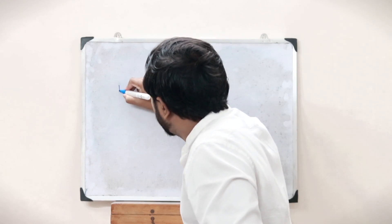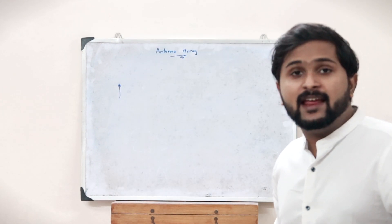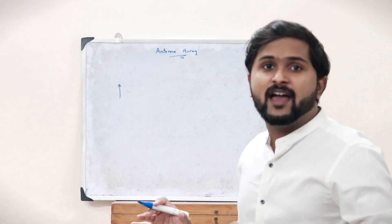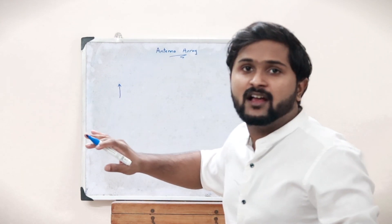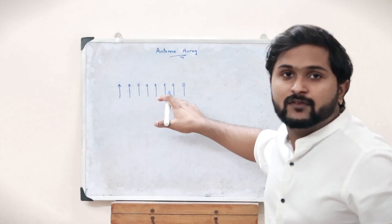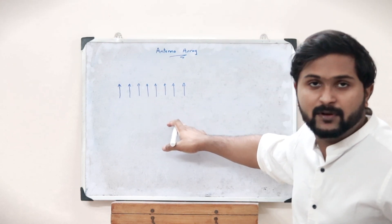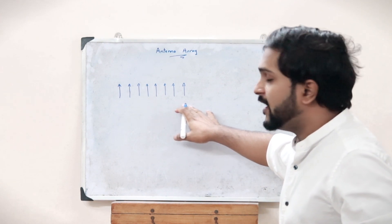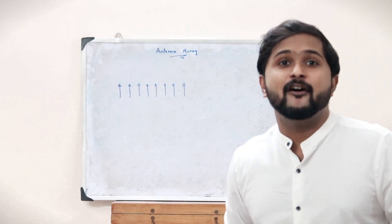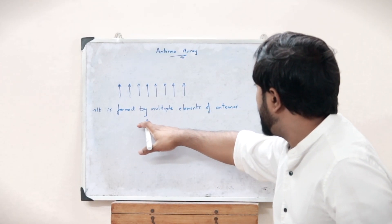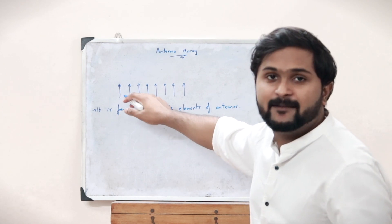In the previous module we saw what a single antenna did. Now imagine we take multiple identical antennas and place them together — we obtain what is called an array of antennas. Here, a multiple number of elements, that is a multiple number of antennas, are placed together, and each element is a particular antenna.